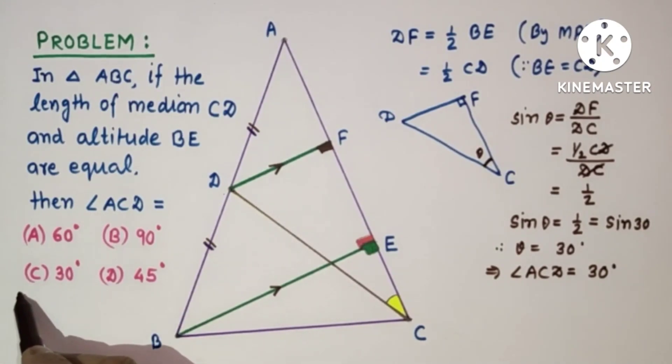And hence option C is correct. On the other hand, if we don't want to use trigonometry, DF is half of DC.